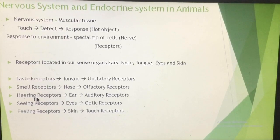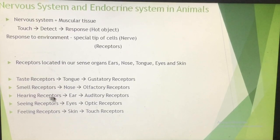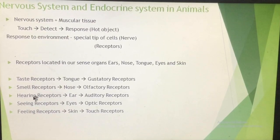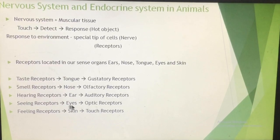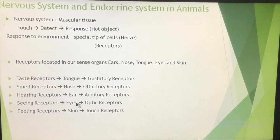The third type is hearing receptors. We hear with the help of ears, and in the ears certain receptors are present. These hearing receptors are known as auditory receptors. So, auditory receptors present in the ear are hearing receptors. Similarly, eyes also have receptors, and with the help of those receptors we can see a particular object. The receptors present in the eyes are known as optic receptors.